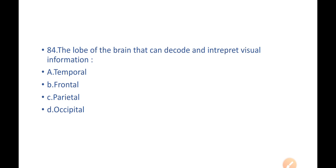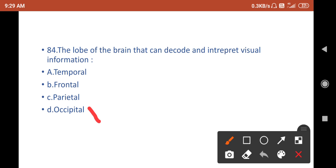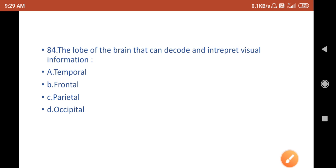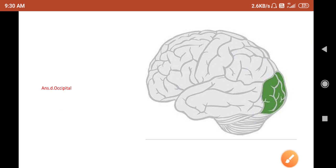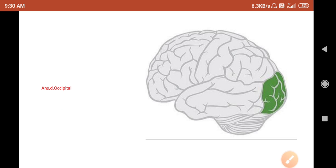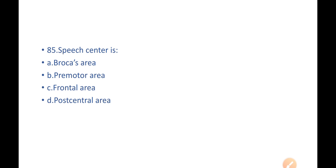Next question: which lobe of the brain can decode and interpret visual information? A) temporal lobe, B) frontal lobe, C) parietal lobe, D) occipital lobe. The answer is D — occipital lobe. Here you can see the occipital lobe; the green-colored part shown is the occipital lobe.